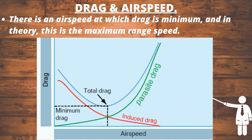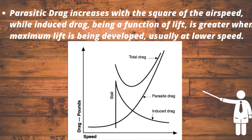Drag and airspeed. There is an airspeed at which drag is minimum, and in theory this is the maximum range speed. However, flight at this speed is unstable because a small decrease in speed results in an increase in drag and a further fall in speed. In practice, for stable flight, maximum range is achieved at a speed slightly above the minimum drag speed. Parasitic drag increases with the square of the airspeed, while induced drag is greater when maximum lift is being developed, usually at lower speeds.